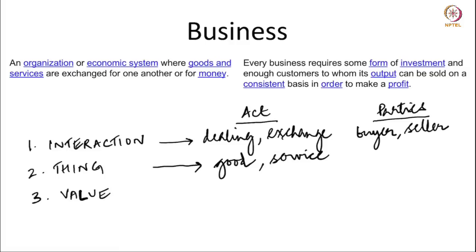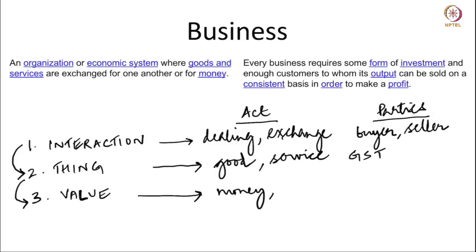You could also say products or merchandise, but largely this comprises goods and services — that is the reason we have GST, the goods and services tax, because goods and services is understood to encompass everything that can be a part of trade. The third thing to fall within the definition of a business is that this exchange or interaction of the thing has to be for a value, which means money passes hands or the exchange is itself of valuable goods.